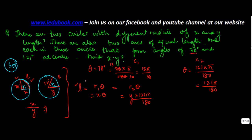Now because this length is equal for both, you know that r1 theta has to be equal to r2 theta. Or x into theta, for this was 13 pi by 30, is equal to y into 121 pi upon 180.